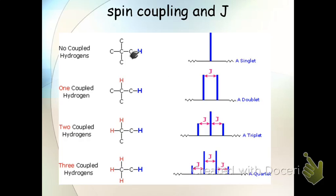So if you have a hydrogen with no neighbors, what you expect to happen is to get a singlet. If you have a hydrogen with one neighbor, because this could be spin up or spin down, you expect a doublet.